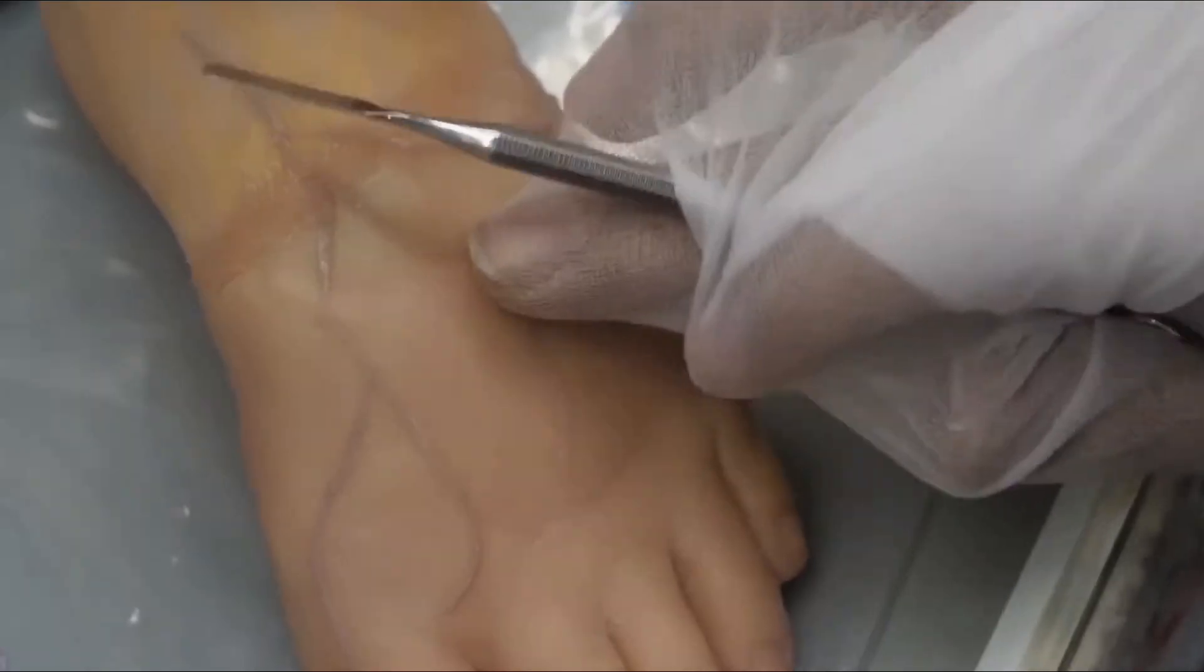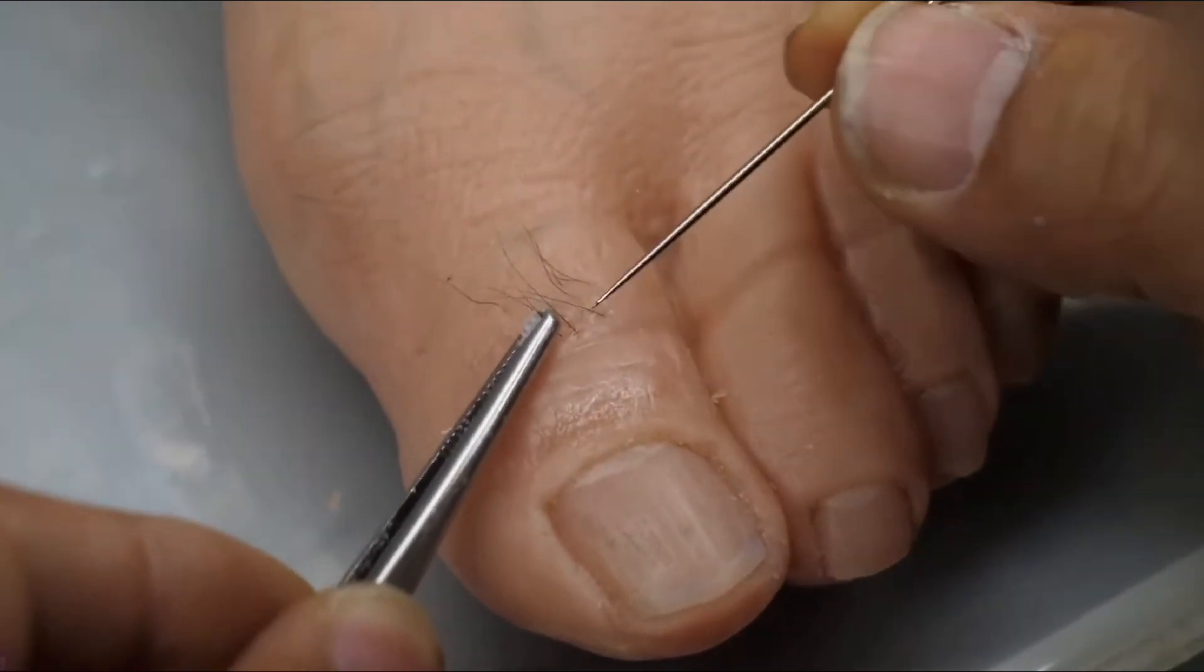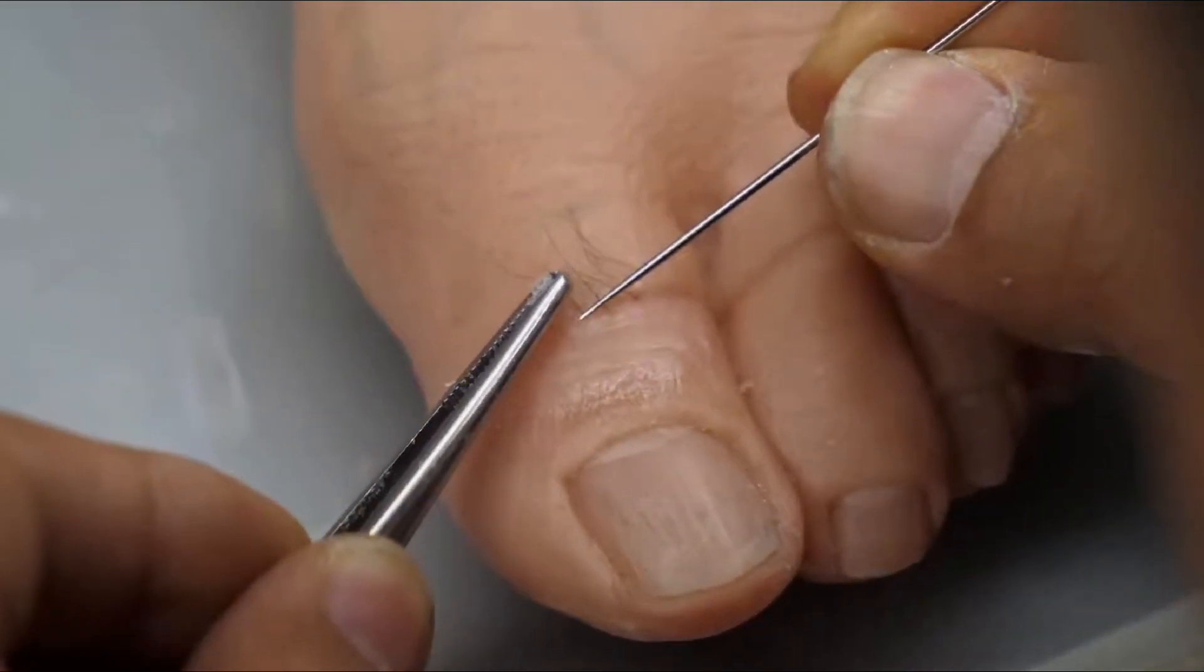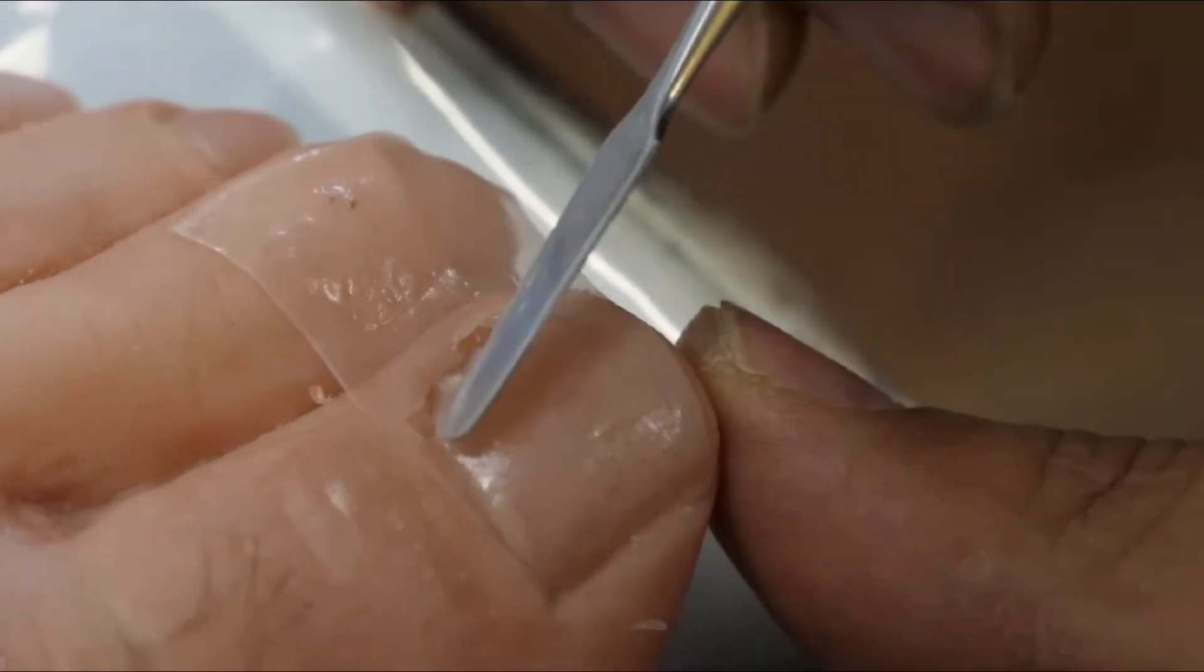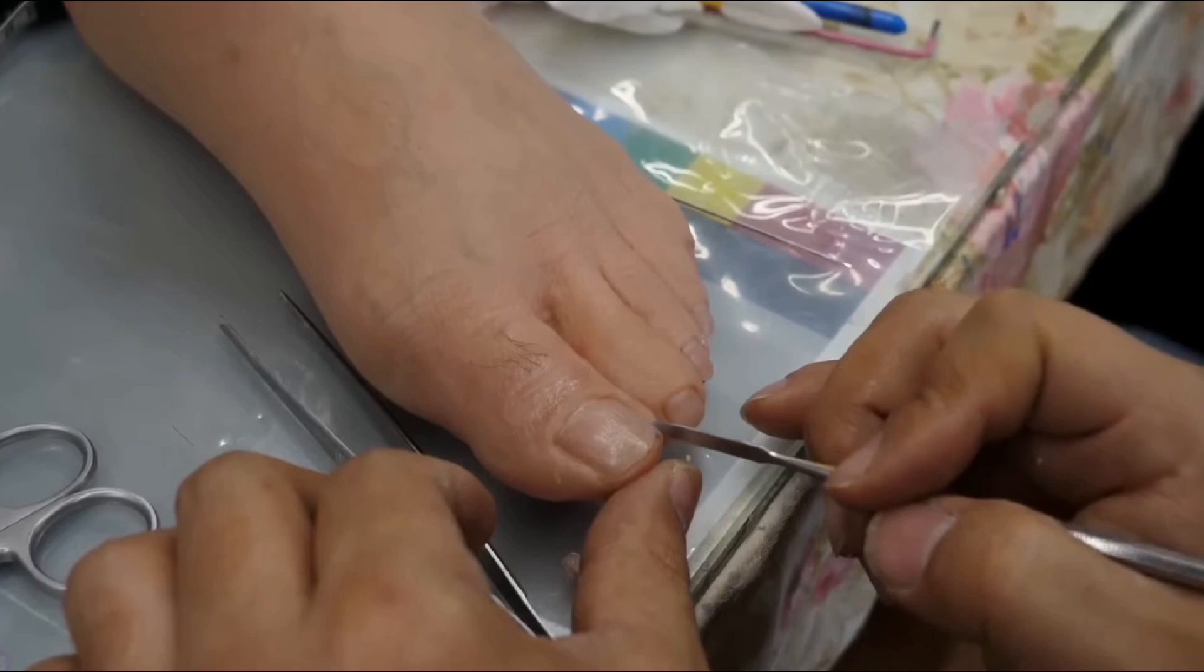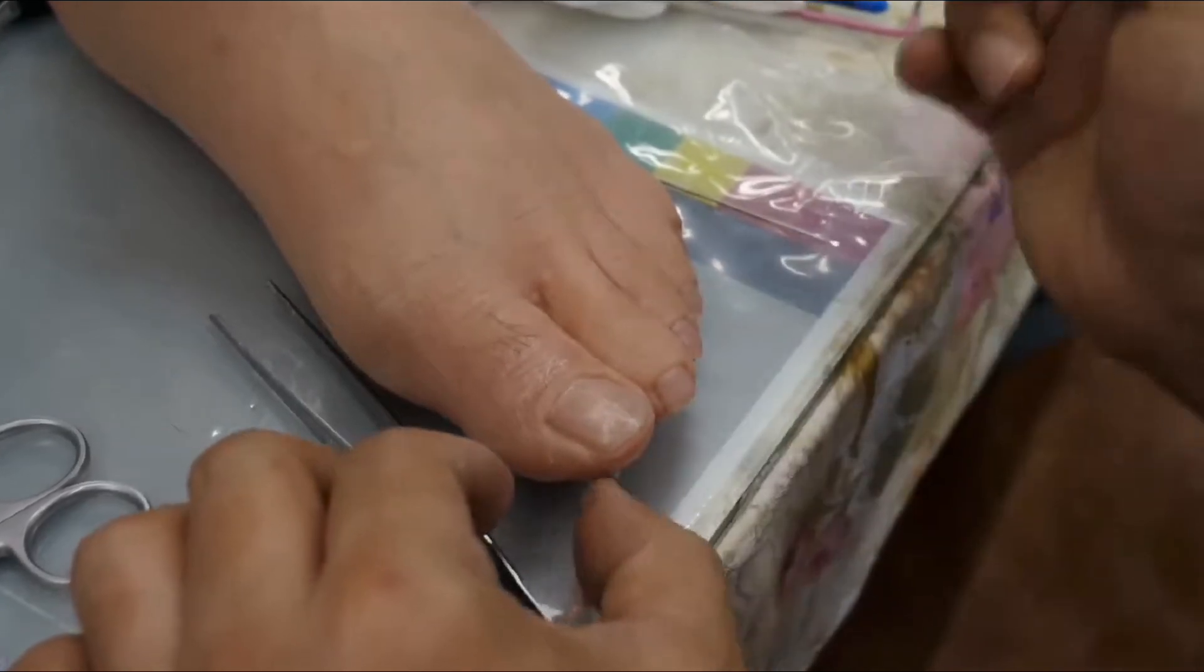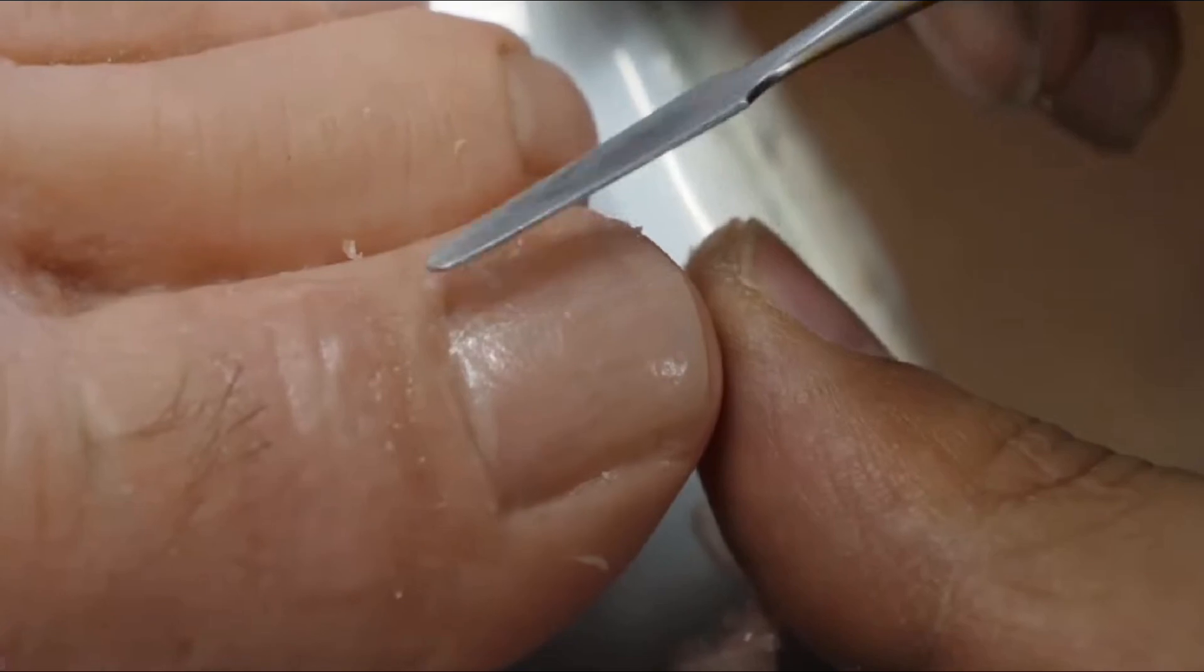In foot prosthetics, a digital scan of the patient's foot captures accurate dimensions for creating a 3D model, ensuring a custom fit. The model is then refined using design software, followed by 3D printing with medical-grade silicone. This additive manufacturing process allows for the creation of intricate details that mimic natural skin.